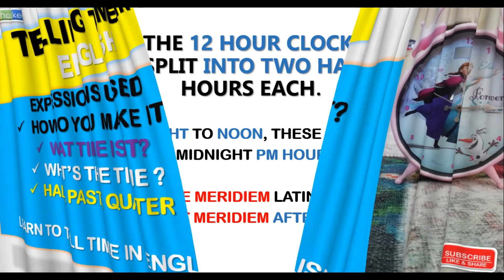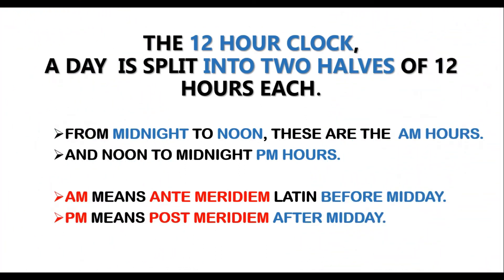Before we go on, there are some things you need to know. Time has two systems. We have the 12-hour clock — a day is split into two halves of 12 hours each. We have the nighttime and the daytime, each with 12 hours, making 24 hours in a day total.